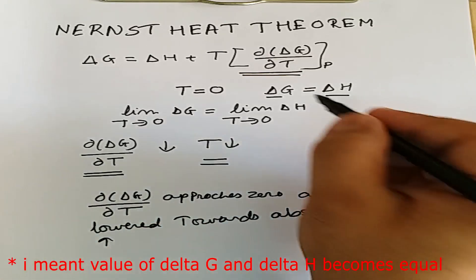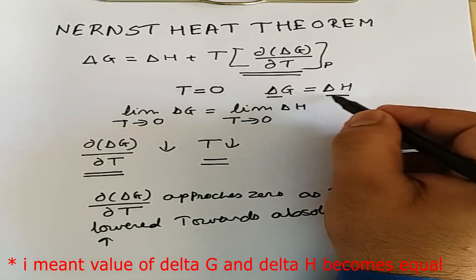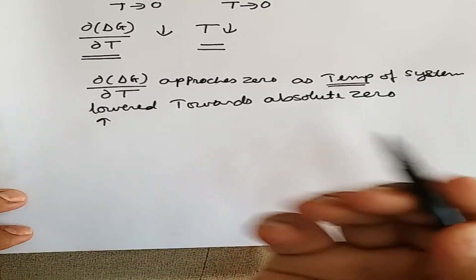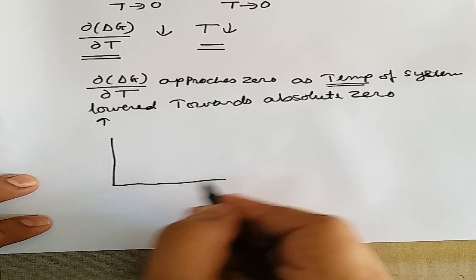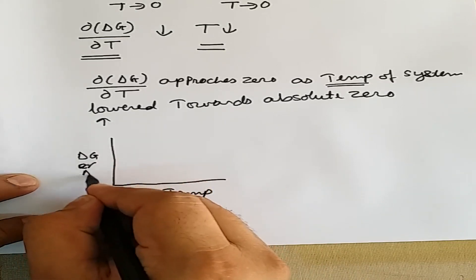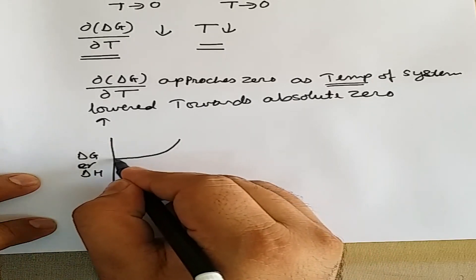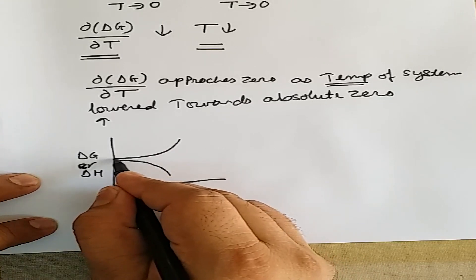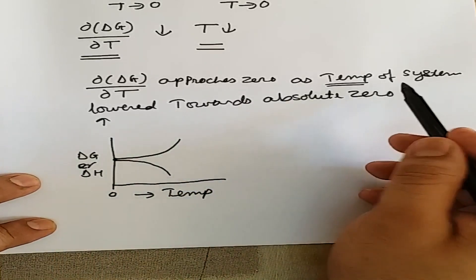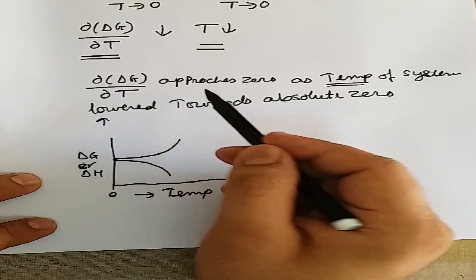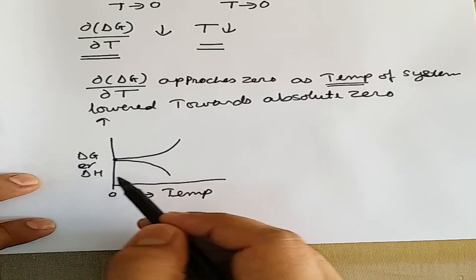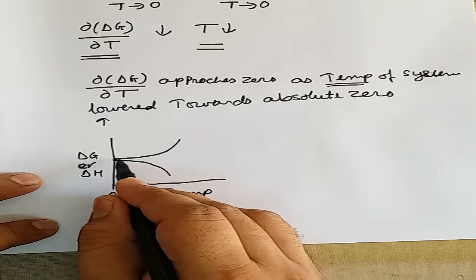Not only does dΔG/dT approach zero, but the change in free energy as well as the change in entropy also approaches zero. This can be shown by the following graphical representation: if we plot a graph of temperature versus ΔG or ΔH, we can see that the values of ΔH and ΔG decrease and meet each other at absolute zero. Simultaneously, the entropy of the system also decreases and at absolute zero both ΔG and ΔH will be equal to each other.